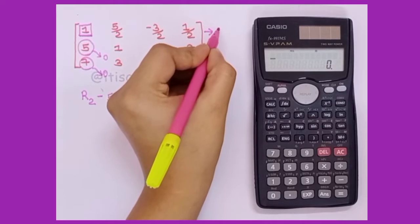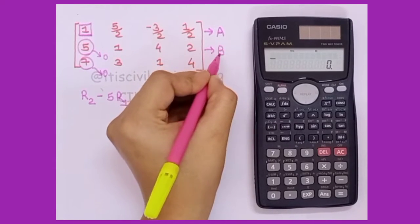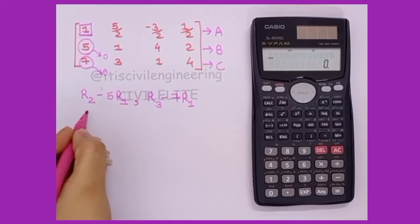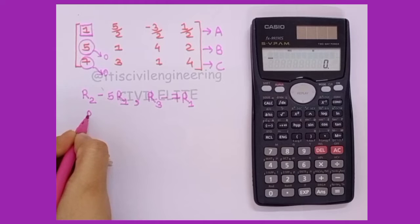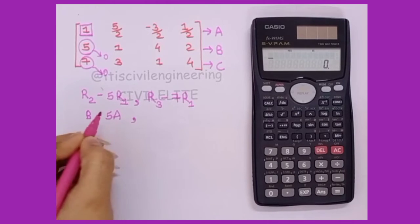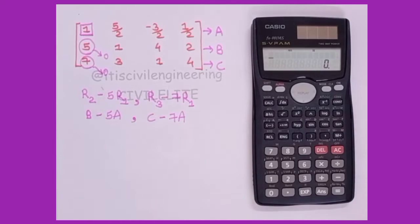Now here, we will give it the name as a. The second row will be b and the third row will be c. Now let's see how we can input this. It will be b minus 5a, and this will be c minus 7a.